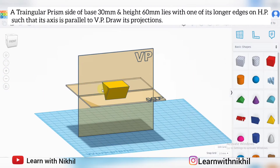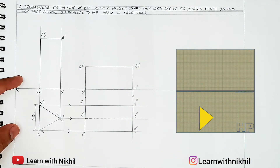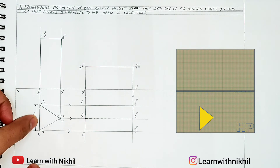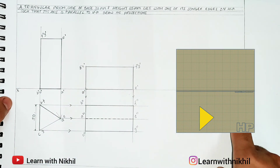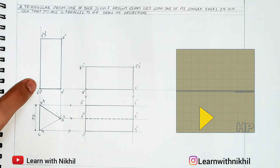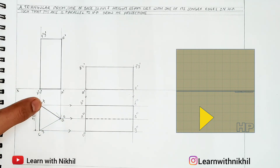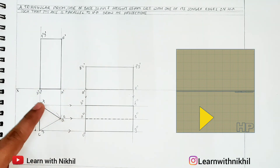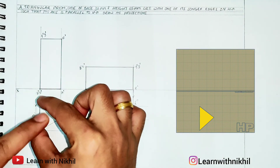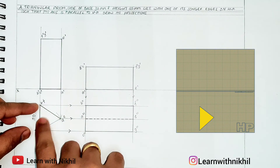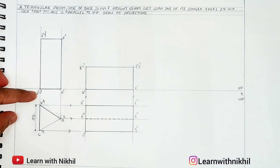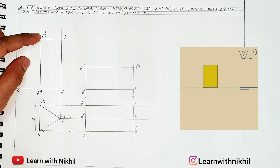Now I will explain it manually. To begin drawing manually: as per the question there is a triangular prism with 30 millimeter base and height 60 millimeter. First we draw the XY line — above is VP and below is HP. As per the question the triangular prism is placed on the horizontal plane, so its base is a triangle shape. We have drawn a triangle with side 30, then taken the projections upward, as the prism has a base triangle and the upper face is also a triangle. We have named ABC as the bottom triangle and EFG as the upper triangle.